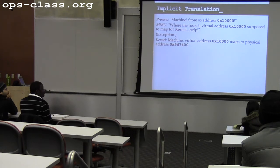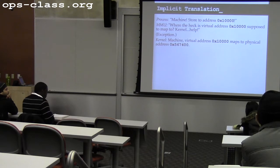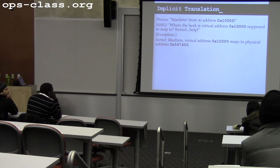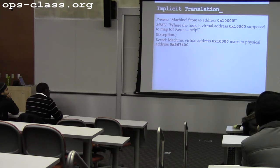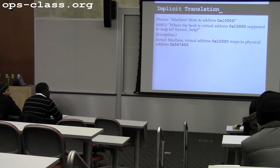Segmentation fault, core dumped — that's where this comes from. If this happens in a user program, the kernel will trap it, kill the program, and if you're running C, the C runtime will dump some state about what happened. That's what happens if your user process tries to translate an address that the kernel doesn't know how to translate — it just gets killed.